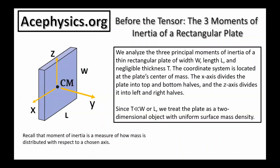On this slide, I will analyze the three principal moments of inertia of a thin rectangular plate of width w, length l, and negligible thickness t. The coordinate system is located at the plate's center of mass. The x-axis divides the plate into top and bottom halves, and the z-axis divides the plate into left and right halves. Since the thickness is much smaller than the width or the length, we treat the plate as a two-dimensional object with uniform surface mass density.